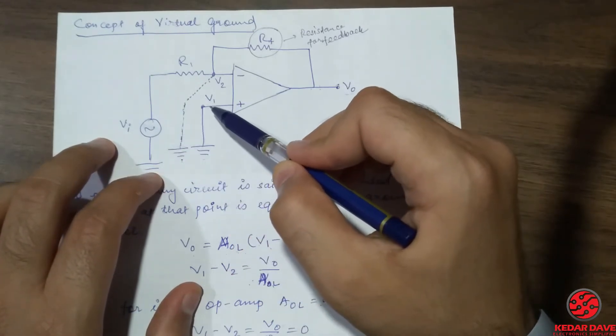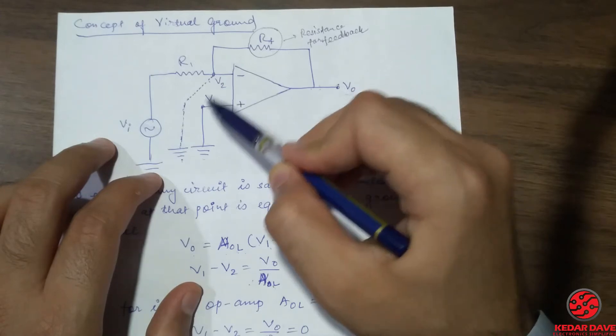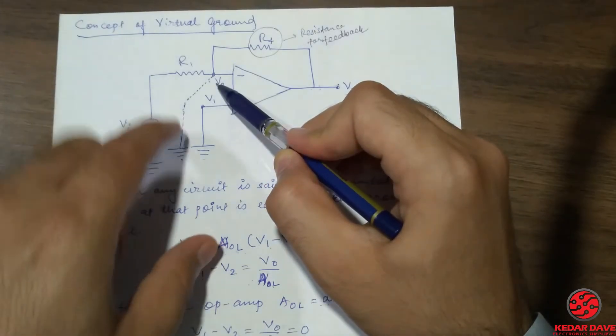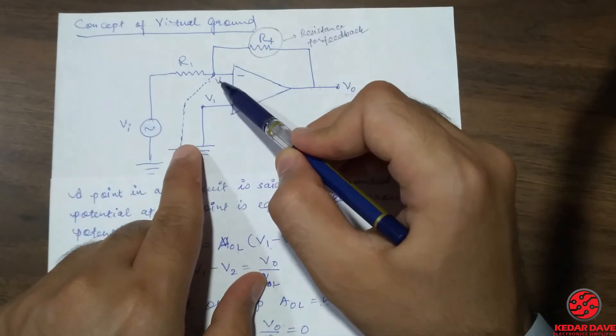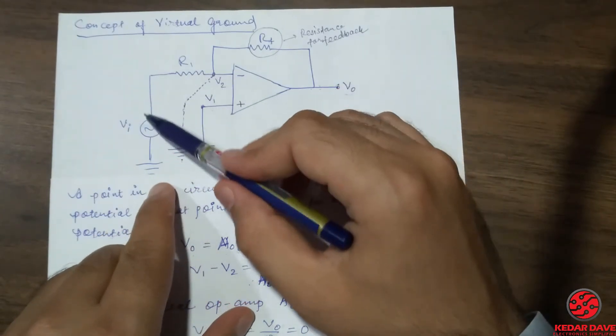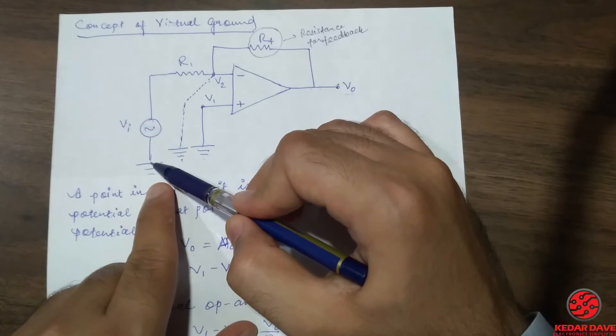If the potential of V1 and V2 both are equal then it is called the concept of virtual ground, that V2 terminal is also in the grounded position.